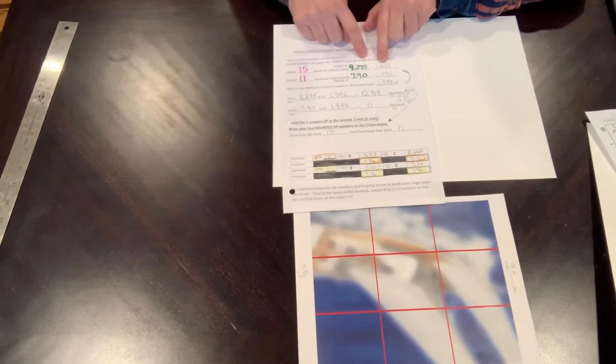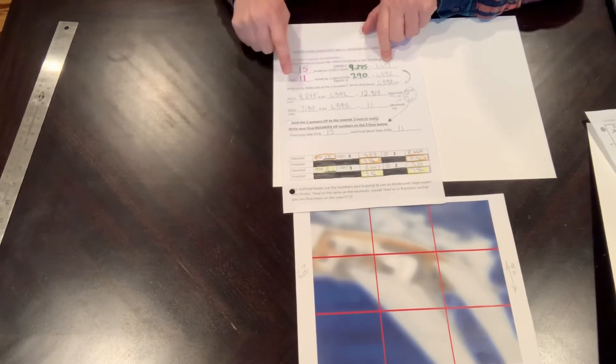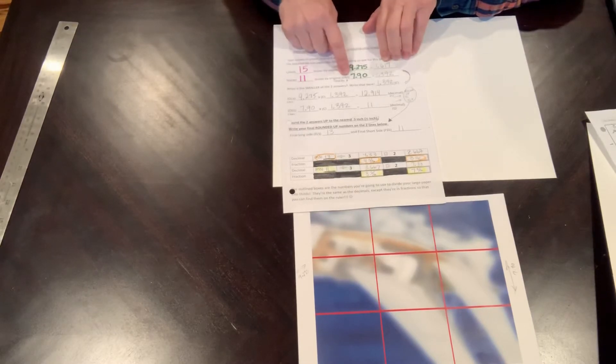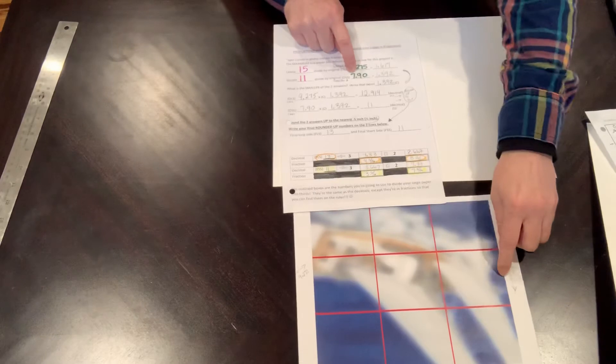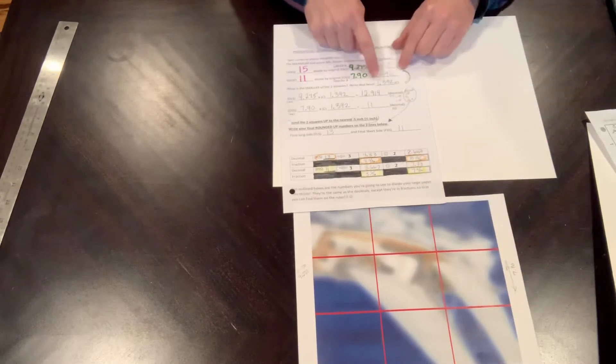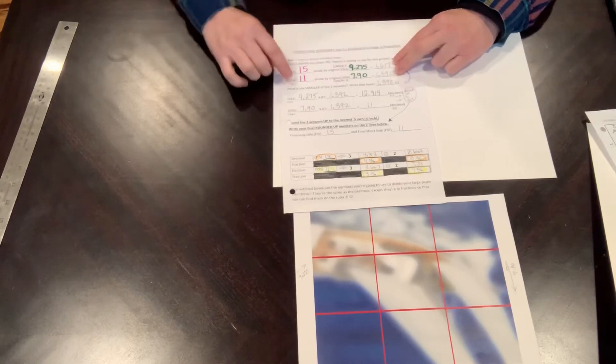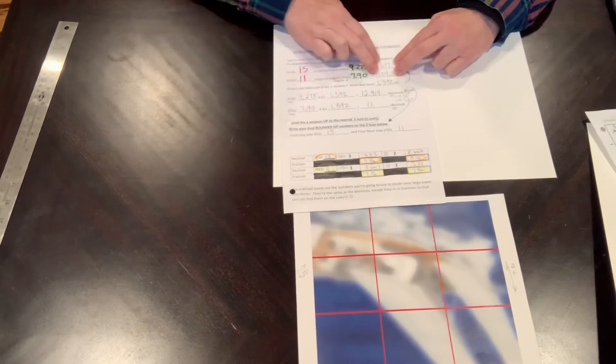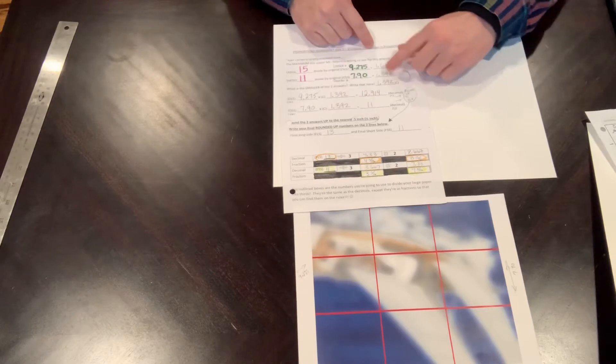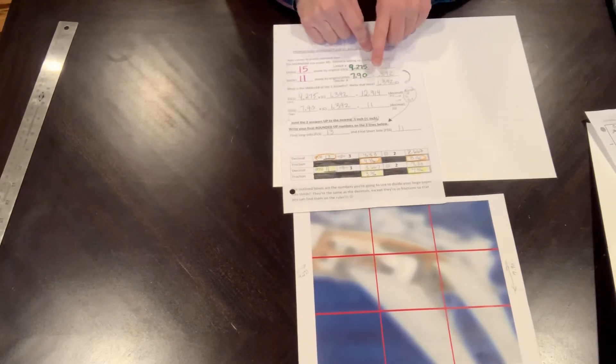I took 15 and divided it by the large side to get 1.617. I took the short side and divided it by my short side image which is 7.90, and I came up with 1.392. It says what is the smaller of these two answers? Between 1.617 and 1.392, our smaller number is 1.392, which is now denoted as C.